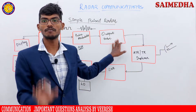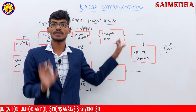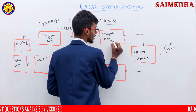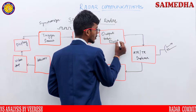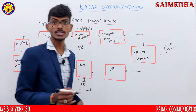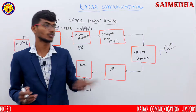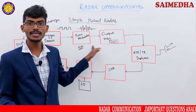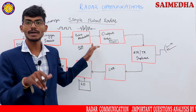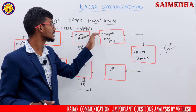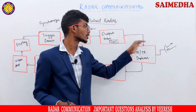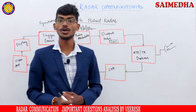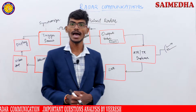The next block is the output tube, which is an amplifier. Normally, a TWT amplifier — Traveling Wave Tube amplifier — is used. The TWT amplifier amplifies frequencies at very high levels, in the order of gigahertz. This output tube amplifies the analog signal generated by the pulse modulator and sends it to the duplexer. So the output tube is basically a TWT — Traveling Wave Tube — amplifier.